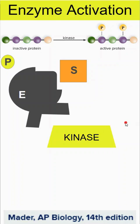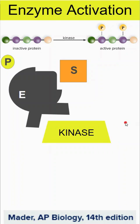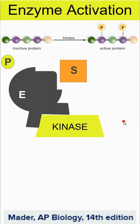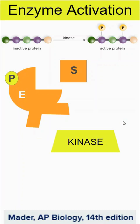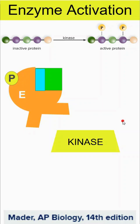A kinase enzyme is an enzyme that helps phosphorylate other proteins. As the phosphate group gets added, all of a sudden the enzyme becomes activated, which allows the substrate to bind to the active site and create products.